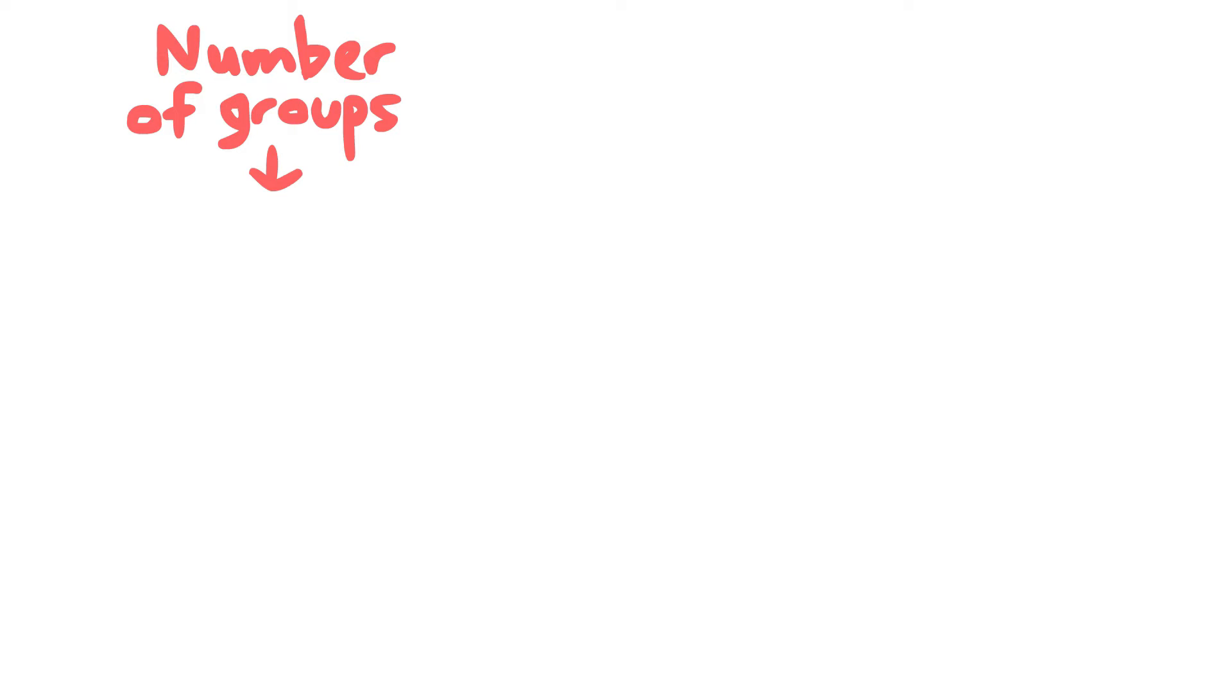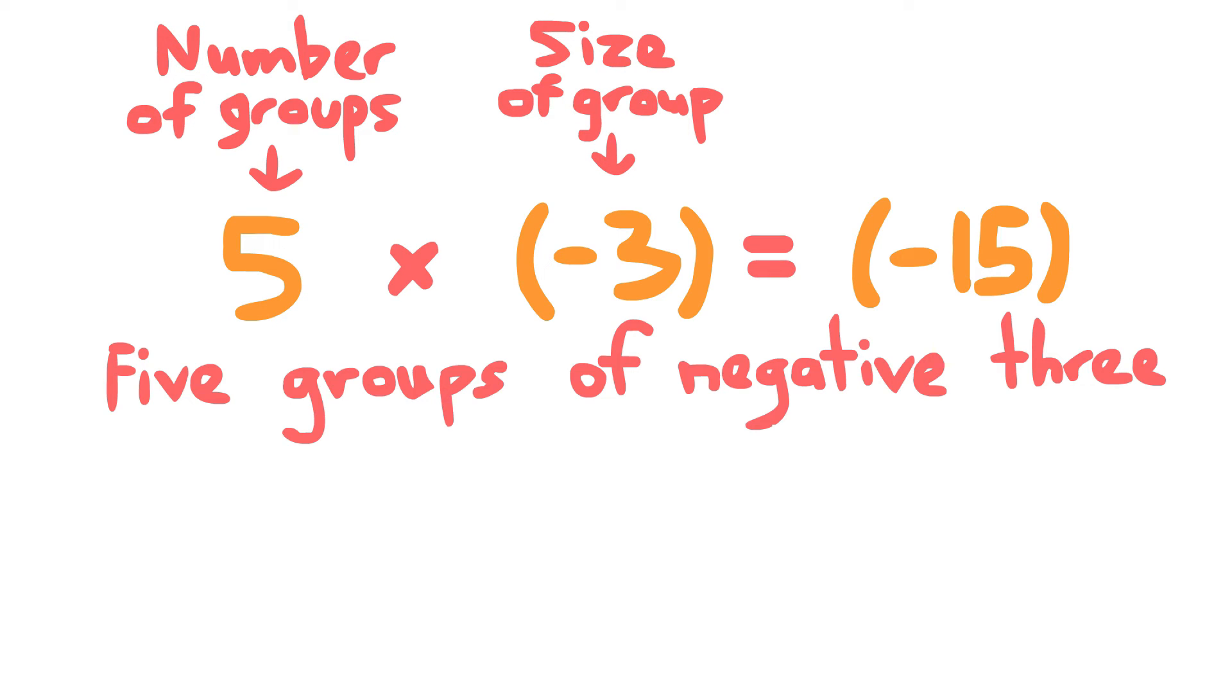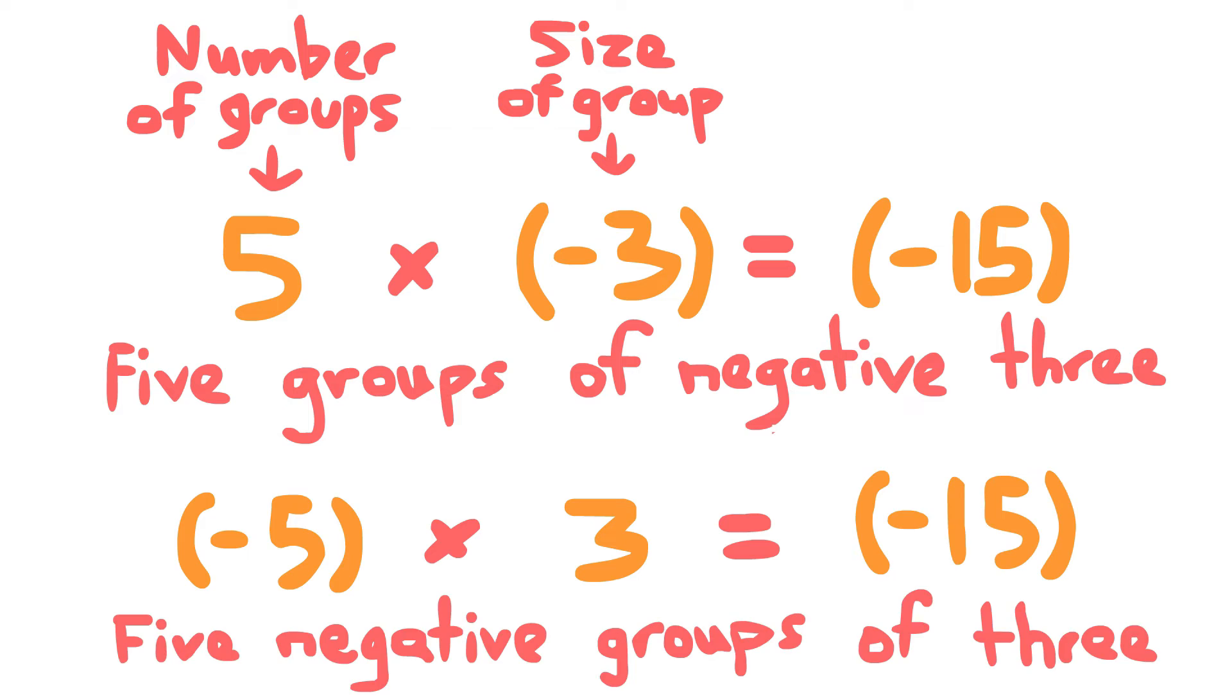Multiplying negatives happens so naturally. 5 times negative 3 is 5 groups of negative 3. So what about negative 5 times 3 now? It's 5 negative groups of 3.